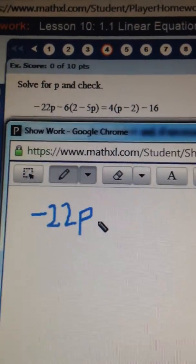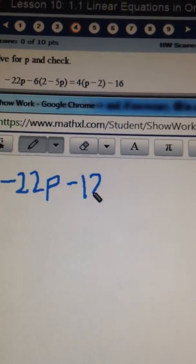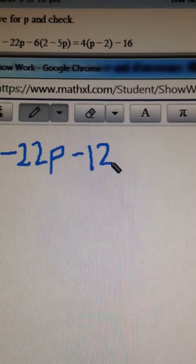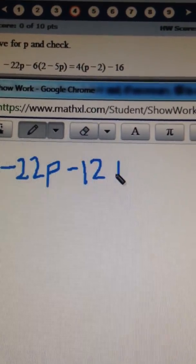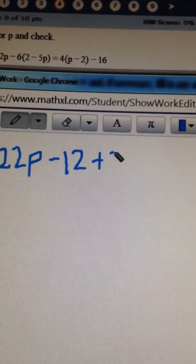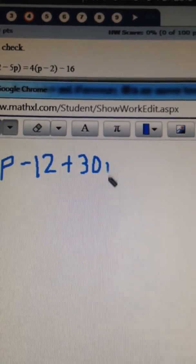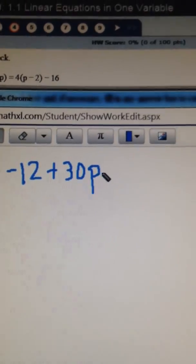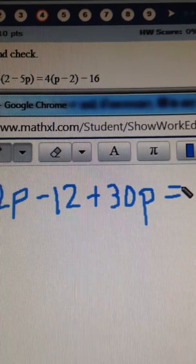Negative 6 times 2 will give us negative 12, and negative 6 times negative 5p will give us a positive 30p, equal to the other side. We have 4p minus 8.